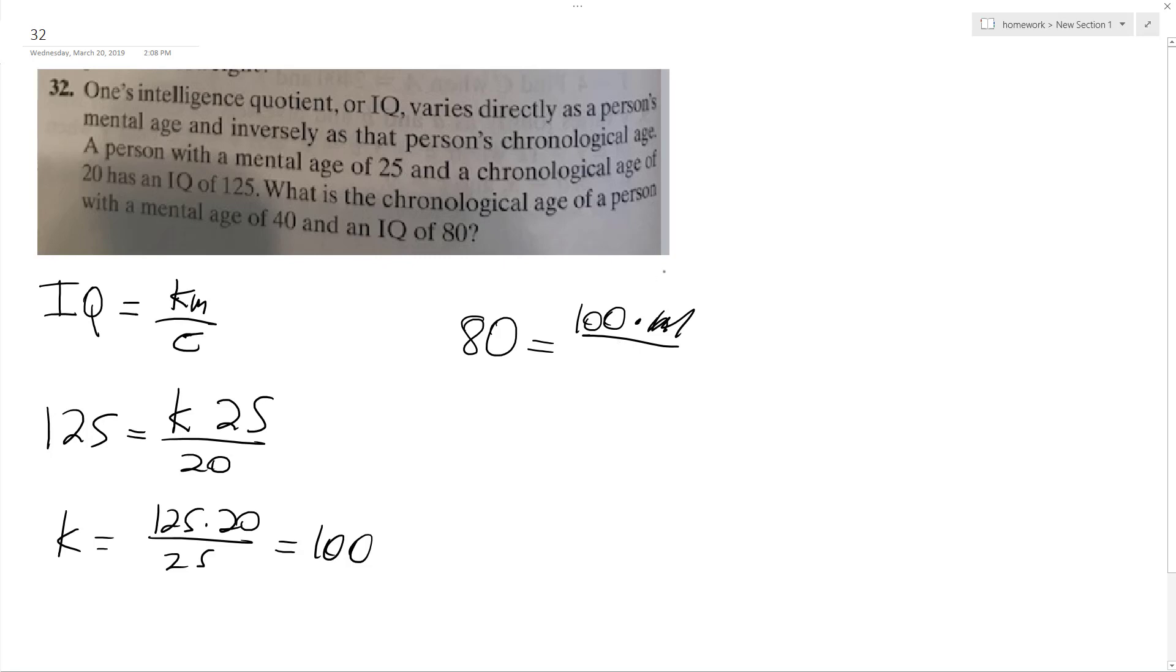Oh, we want to find their chronological age. I messed up. So that means they've got a mental age of 40, and we want to find the chronological age.